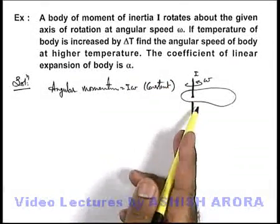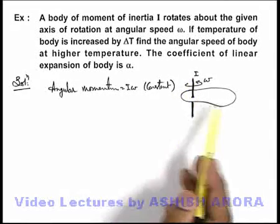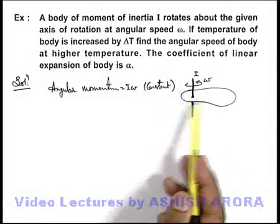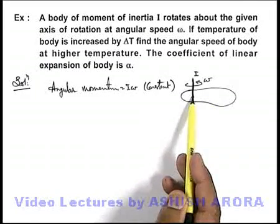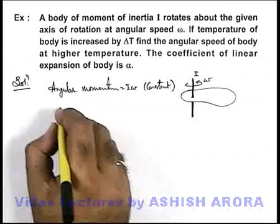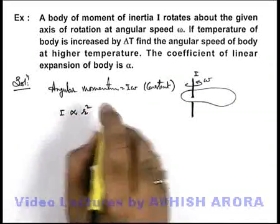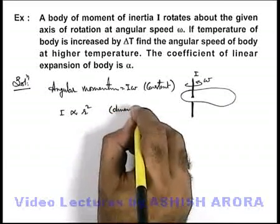In this situation we know well that the moment of inertia I of the body depends upon the dimensions of the body or the distances of various points from the axis of rotation. So we can write moment of inertia is always proportional to r², or we can write as dimension squared.